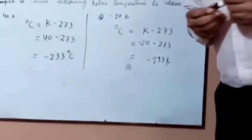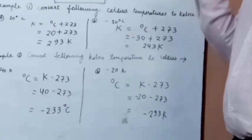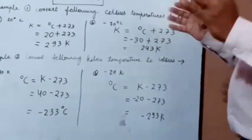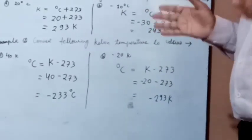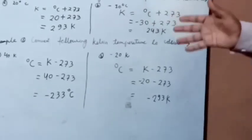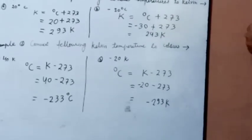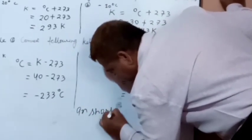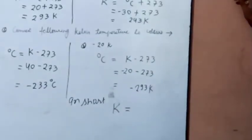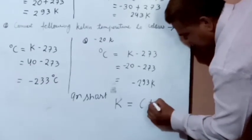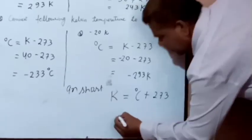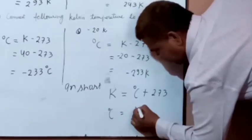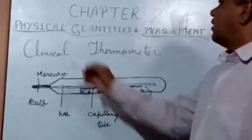In short: if we want to convert Celsius temperature to Kelvin, we add 273 to the given temperature. Similarly, if we want to convert Kelvin temperature to Celsius, we subtract 273 from the given temperature. The formula for converting Kelvin to Celsius is: degree Celsius = Kelvin minus 273. Pause the video and write this in your classwork copy.